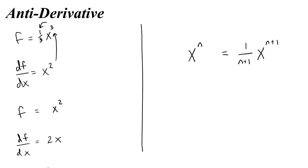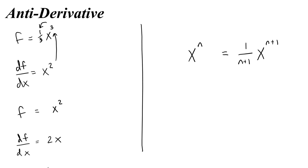Let's talk about the formal notation. How do I say I am taking the antiderivative of x to the n? We're going to talk about why we use all of these letters and operators in another video, but for right now I'm just going to tell you what they are so that you can learn to speak math. To say that you are going to take the antiderivative of x to the n, you use the Latin letter summa, which is like a really long tall s. This summa means take the antiderivative.